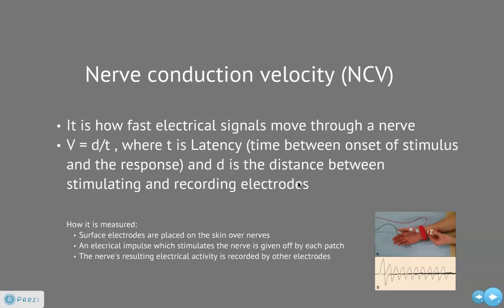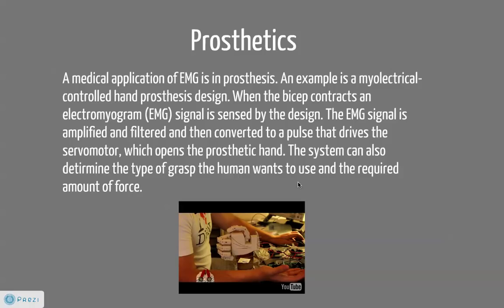An example of where EMG can be used is prosthetics. A microelectrically controlled hand prosthetic design can work using an EMG. The bicep contracts and an EMG signal is sensed by the design. The EMG signal is then amplified and filtered, then converted to a pulse that drives a servomotor, which in turn opens a prosthetic hand. The system can also determine the type of grasp a human wants to use and the amount of force involved, which opens up a scenario where amputees will have the best hand prostheses ever invented.